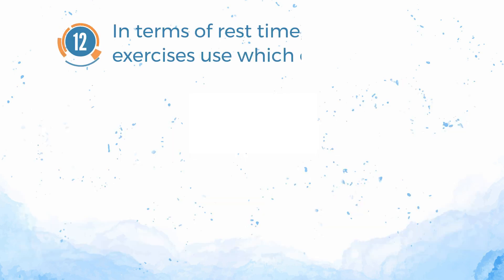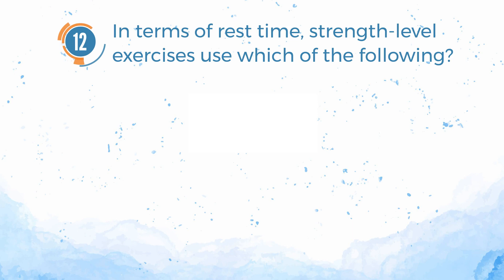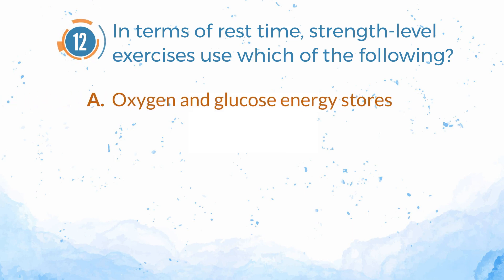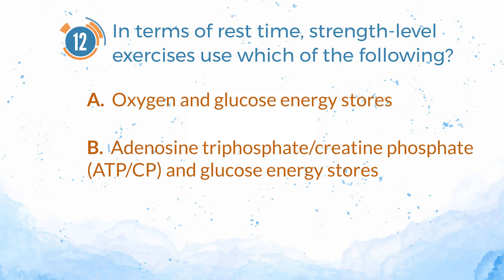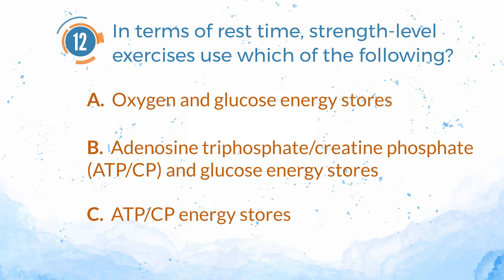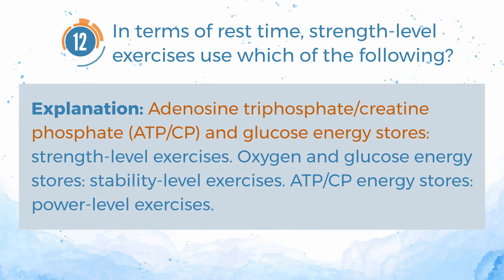Number 12. In terms of rest time, strength level exercises use which of the following? A. Oxygen and glucose energy stores. B. Adenosine triphosphate or creatine phosphate (ATP or CP) and glucose energy stores. C. ATP or CP energy stores. The answer is B: ATP or CP and glucose energy stores. Explanation: Strength level exercises use ATP or CP and glucose energy stores. Stability level exercises use oxygen and glucose energy stores. Power level exercises use ATP or CP energy stores.